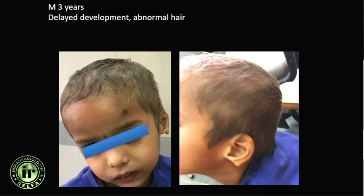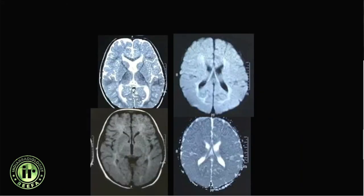Another patient — a three-year-old male with abnormally thin, very fine brittle hair and delayed development — was diagnosed with phenylketonuria.